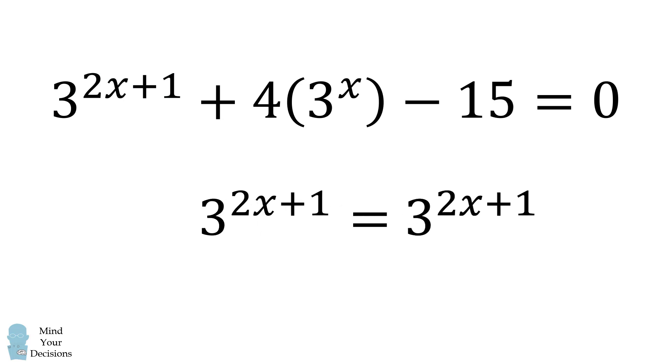This will be equal to 3 to the power of 2x multiplied by 3 to the power of 1. 3 to the power of 1 is equal to 3. So this is equal to 3 multiplied by 3 to the power of 2x. We will substitute that into the leading term.